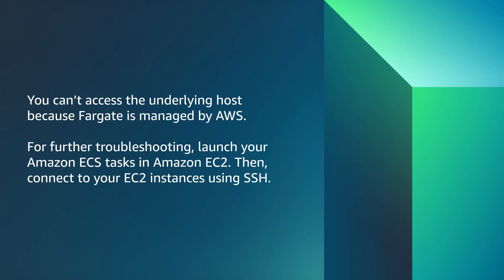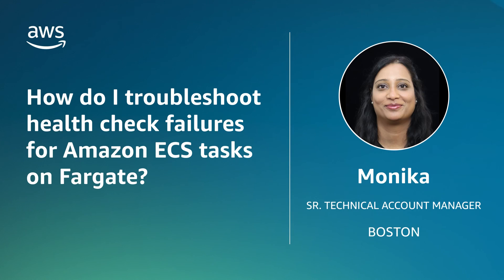You cannot access the underlying host because Fargate is managed by AWS. For further troubleshooting, launch your Amazon ECS task in Amazon EC2 and then connect to your EC2 instance using SSH. So now you know how to troubleshoot health check failures on an ECS task on AWS Fargate. Thanks for watching and happy cloud computing from all of us here at AWS.